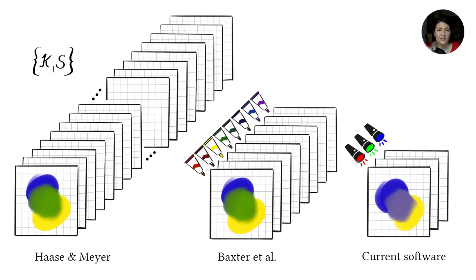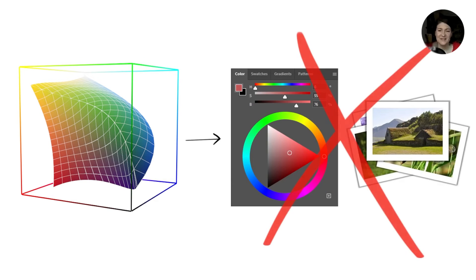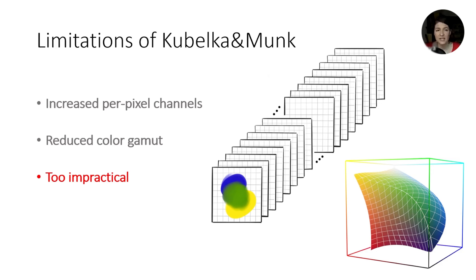And on top of that, using real pigments gives you a reduced color gamut. It doesn't cover all the RGB colors, which means that the artists would lose their RGB picker and they also wouldn't be able to load and work with photographs. So these are the limitations that kept the developers from implementing pigment mixing into painting software. And we knew that if we wanted to change that, we would have to come up with a model that uses Kubelka Munk for color mixing, but it operates purely on RGB and covers the whole RGB gamut.